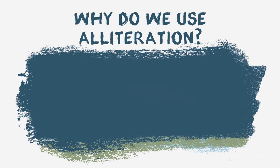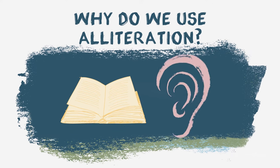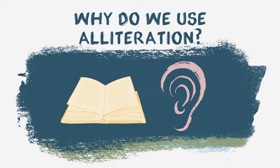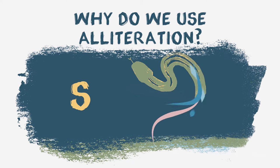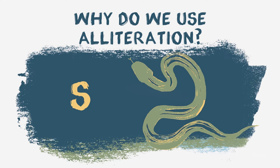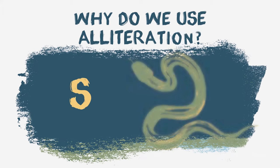So why do we use alliteration? Alliteration is enjoyable to read and hear. It helps to create and communicate the mood of a poem. What kind of mood could the repetition of a 'sssss' sound create? It could suggest the slippery and slithery movements of a snake.